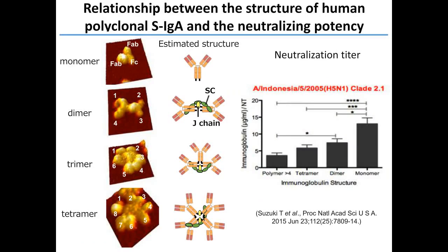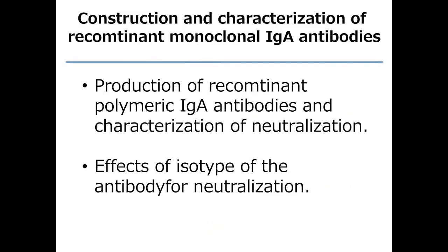We further measured the neutralization ability of each form of IgA antibody. The graph shows the minimum neutralizing titers, where a smaller number means stronger neutralization. As you see, the dimer is stronger than monomer, the tetramer is stronger than dimer, and the polymer is stronger than tetramer in neutralization ability. These results demonstrate increasingly stronger neutralizing ability with higher polymerization of the IgA antibodies.